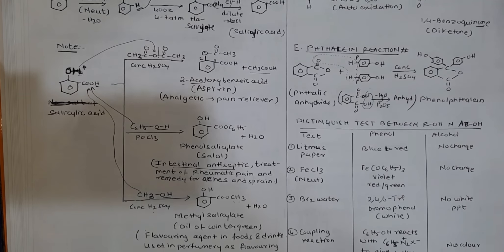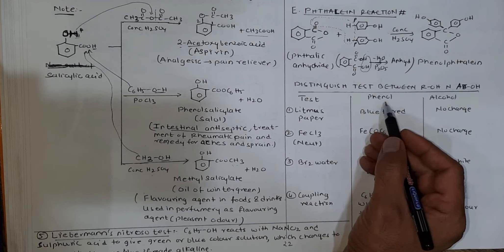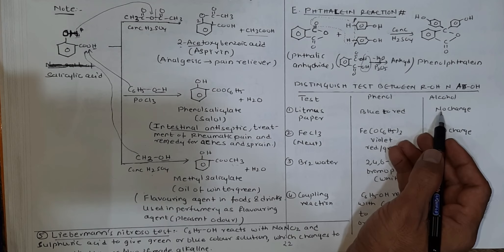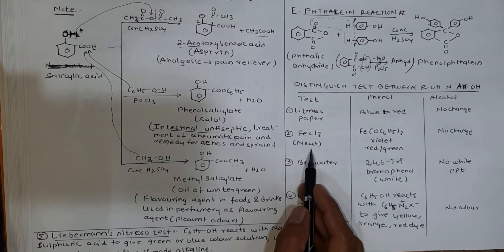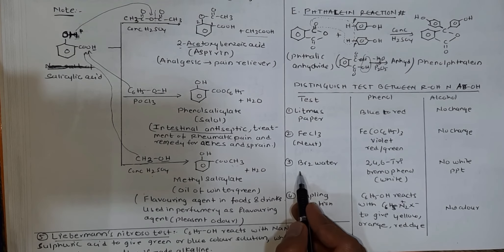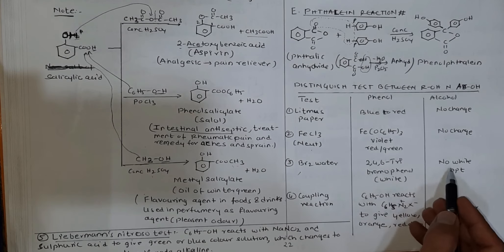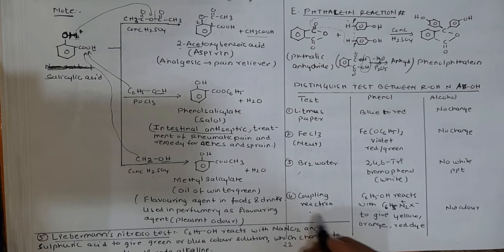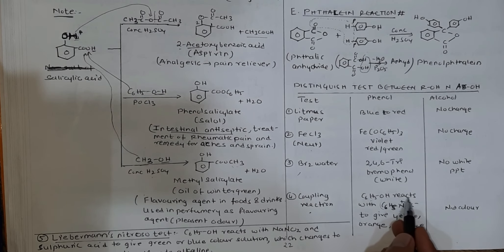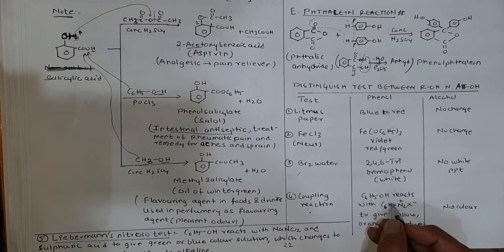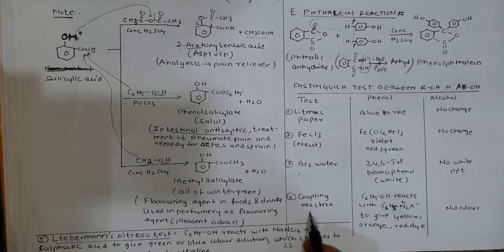How to distinguish between alcohol and phenol: First, litmus paper test - phenol is acidic, turns blue litmus red; alcohol is neutral. FeCl3 forms violet color with phenol, alcohol does not react. Bromine water test forms 2,4,6-tribromophenol white precipitate with phenol, alcohol does not react. Coupling reaction: phenol reacts with benzenediazonium chloride.